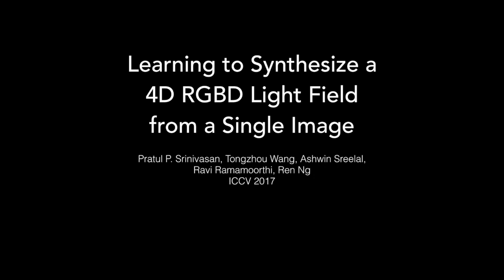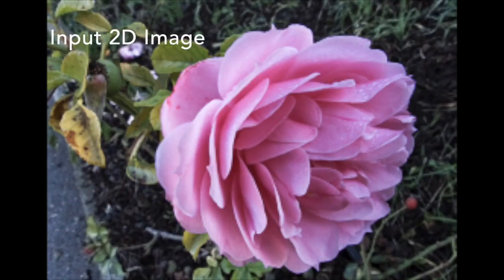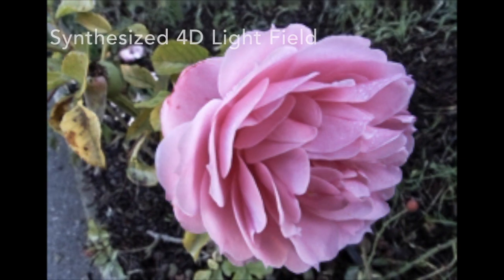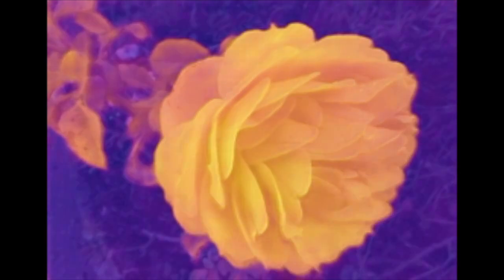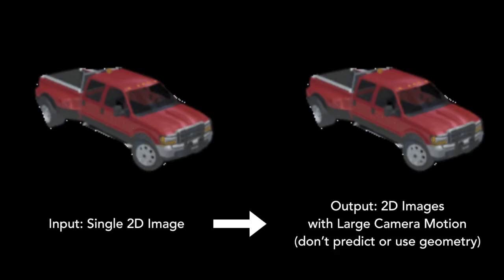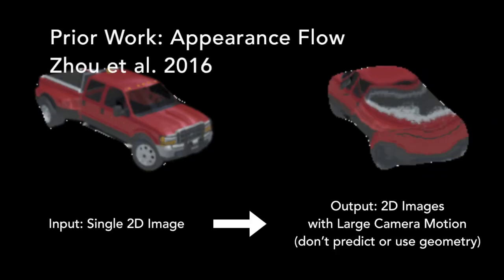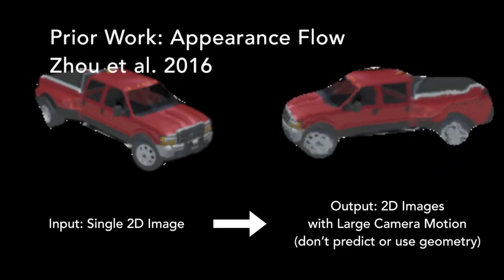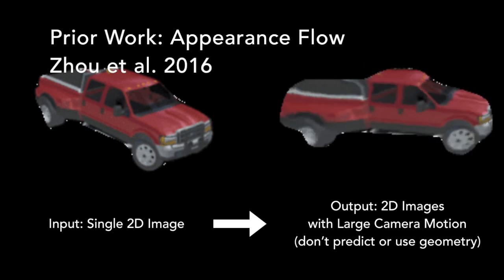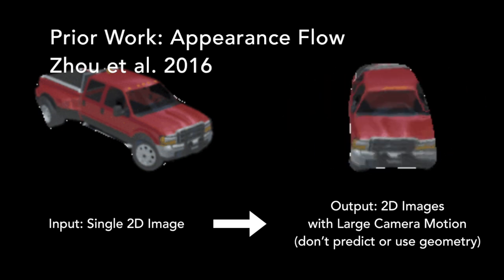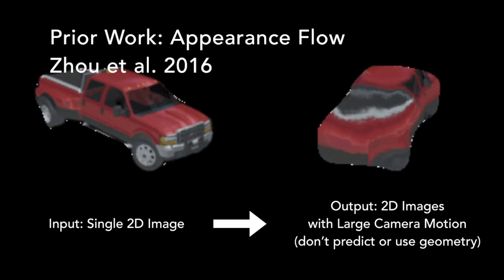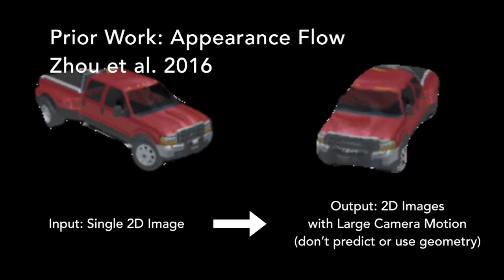We present a machine learning algorithm that takes as input a 2D RGB image and synthesizes a 4D RGBD light field, consisting of the color and depth of the scene in each ray direction. Previous work on view synthesis uses a single 2D image to synthesize other views of a specific object category with very large camera motions, so they are not able to explicitly leverage geometry for photorealistic results.